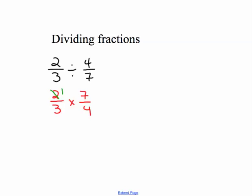2 divides into 2 one time, 2 divides into 4 two times. In multiplying across, my answer now is 7 sixths,